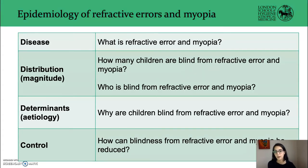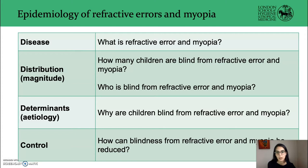You will remember from last term that epidemiology is the study of the distribution and determinants of disease or health-related states to understand and allow for its control. In the case of refractive errors and myopia, we want to understand what refractive error is, how many people are blind from it, who is blind, why are children blind, and finally how blindness from refractive error and myopia can be reduced — which we will cover in a separate session later today.